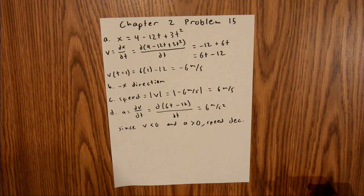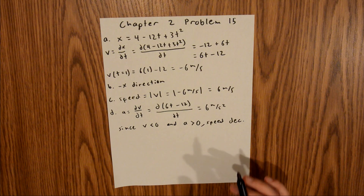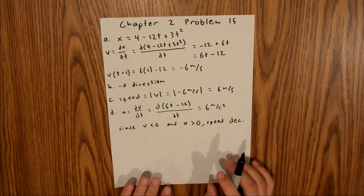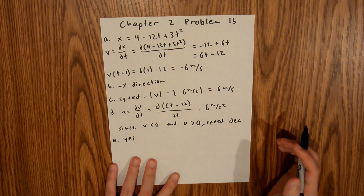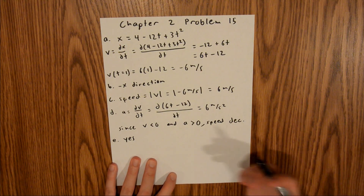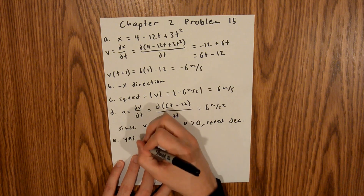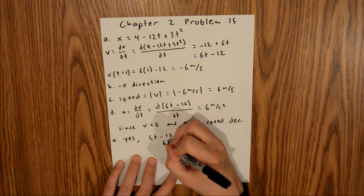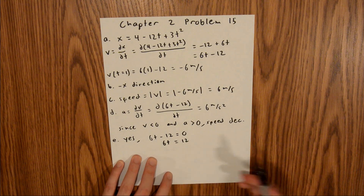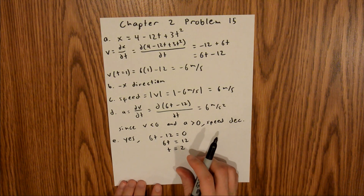For part E, we are asked to find if there is an instant when the velocity is 0. As our speed is decreasing, eventually it will hit 0, and then the particle will proceed in the positive x direction. The answer is yes — there is a time when velocity equals 0. We take the velocity equation and set it equal to 0: 6t minus 12 equals 0. Adding 12 to both sides gives 6t equals 12, and dividing by 6 gives t equals 2 seconds. That's your final answer for part E.